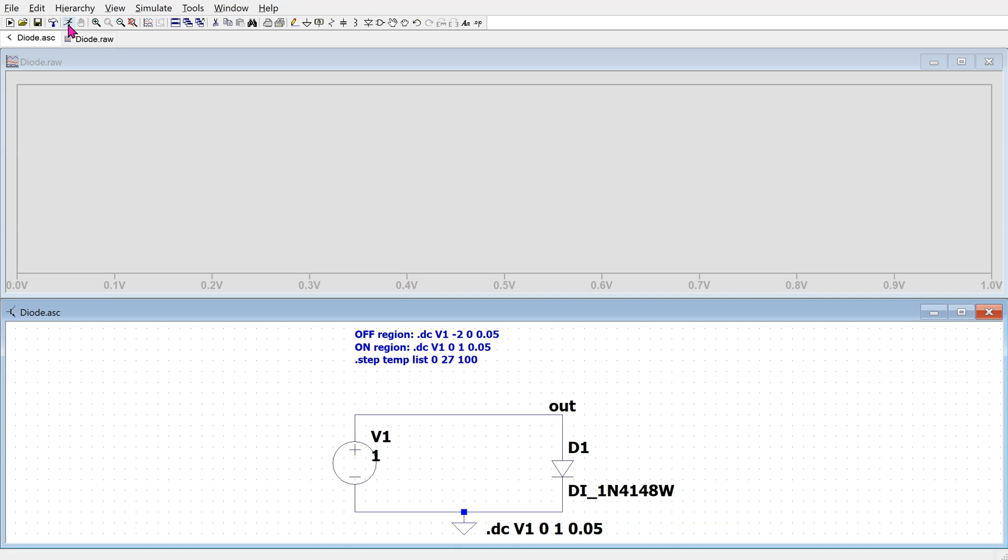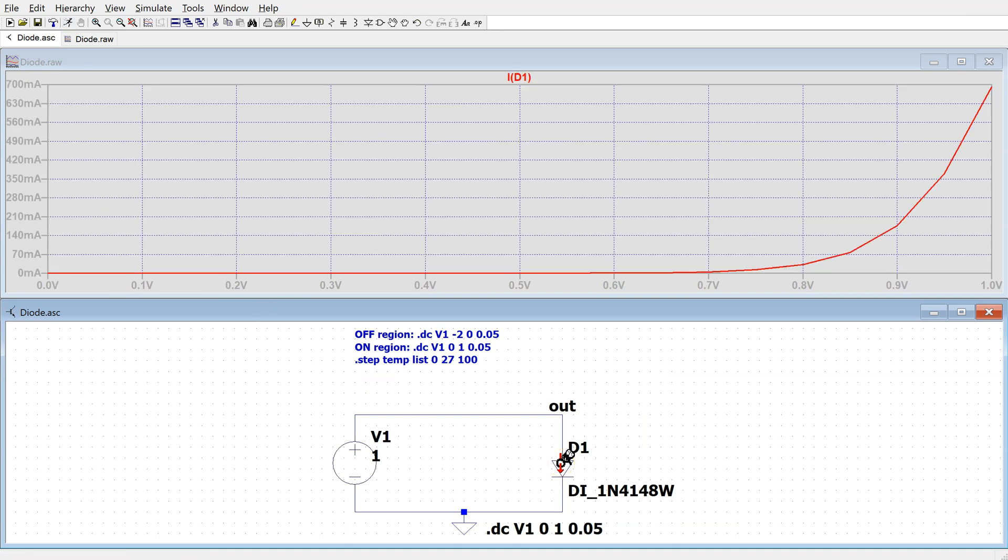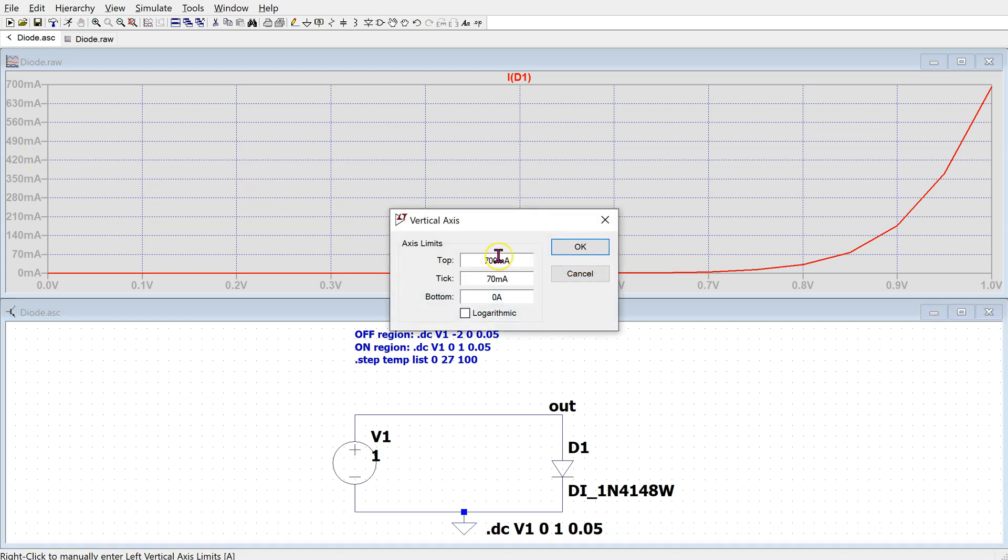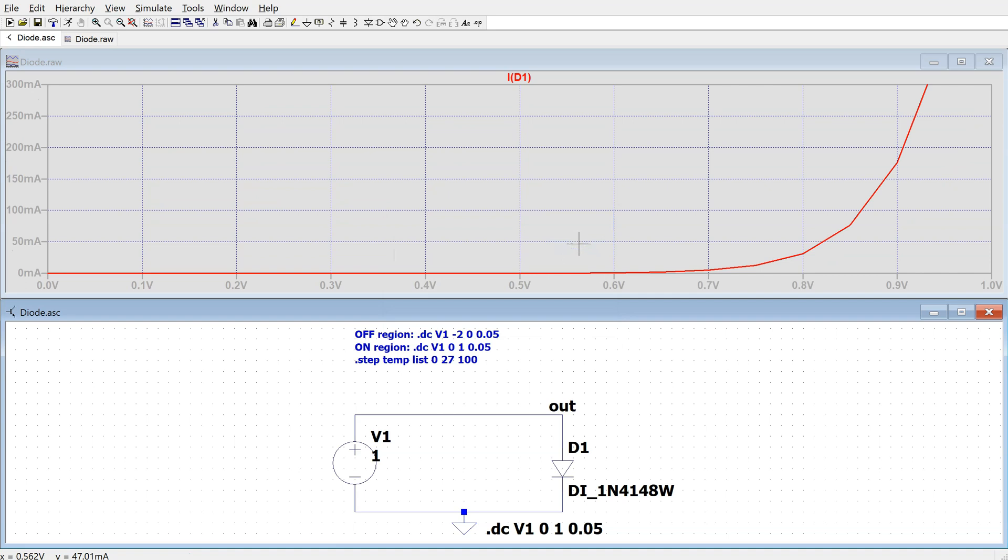When we run this circuit, we can plot the current through the diode and this generates the diode characteristics. The 1N4148 diode has a maximum current rating of 300 mA. Hence, we change the y-axis limit to 300 mA and modify the y ticks accordingly. This then gives us the proper diode characteristics for the ON region.